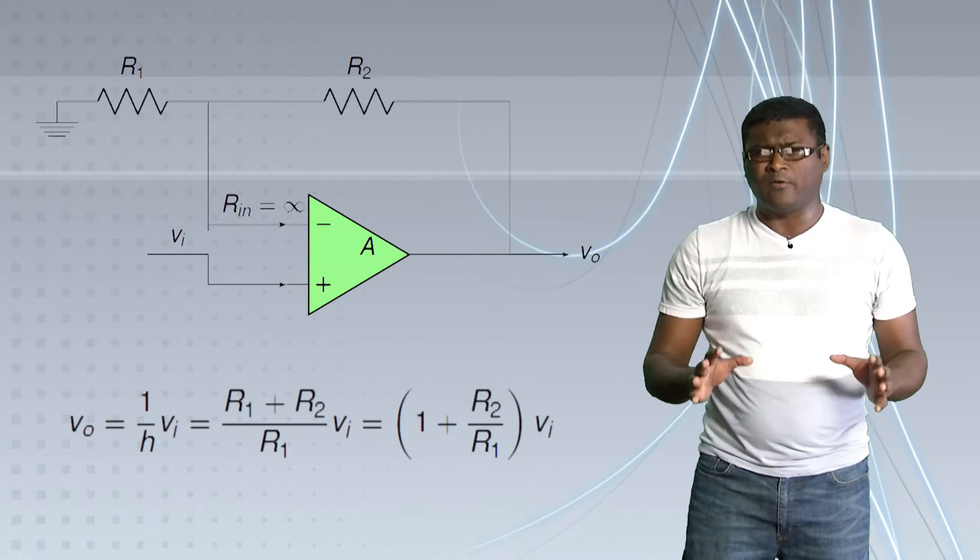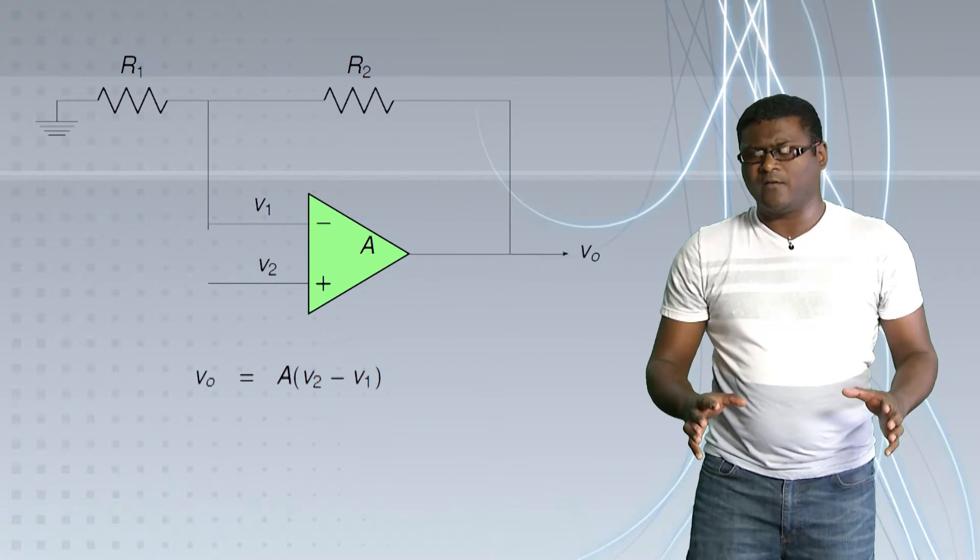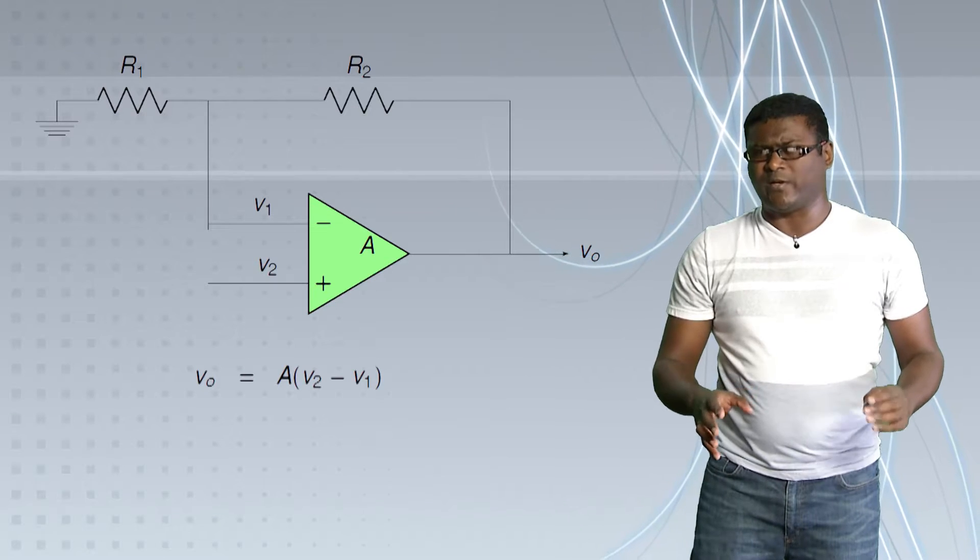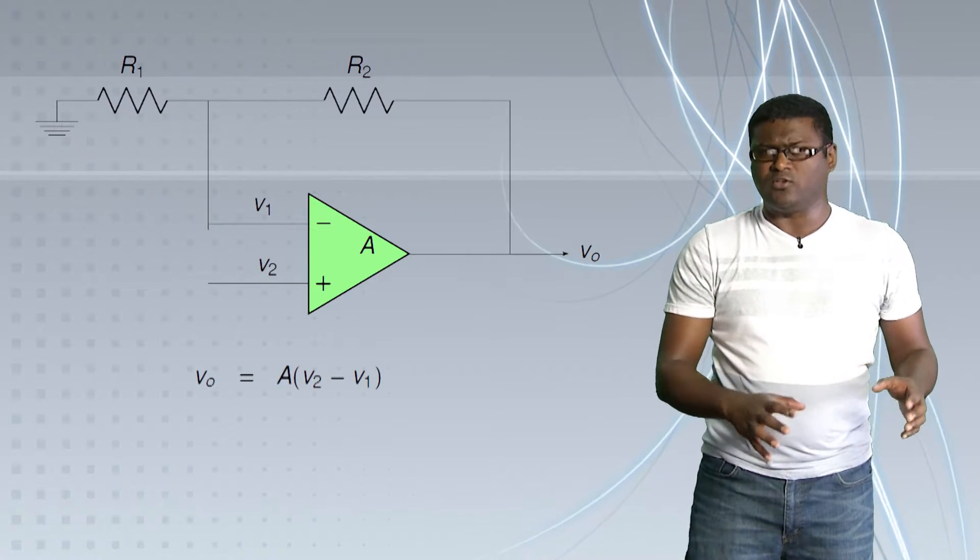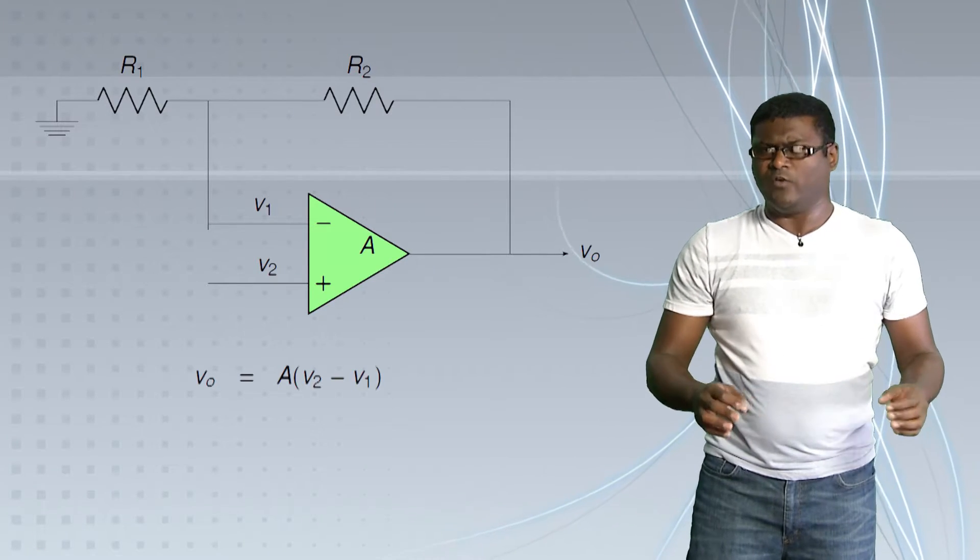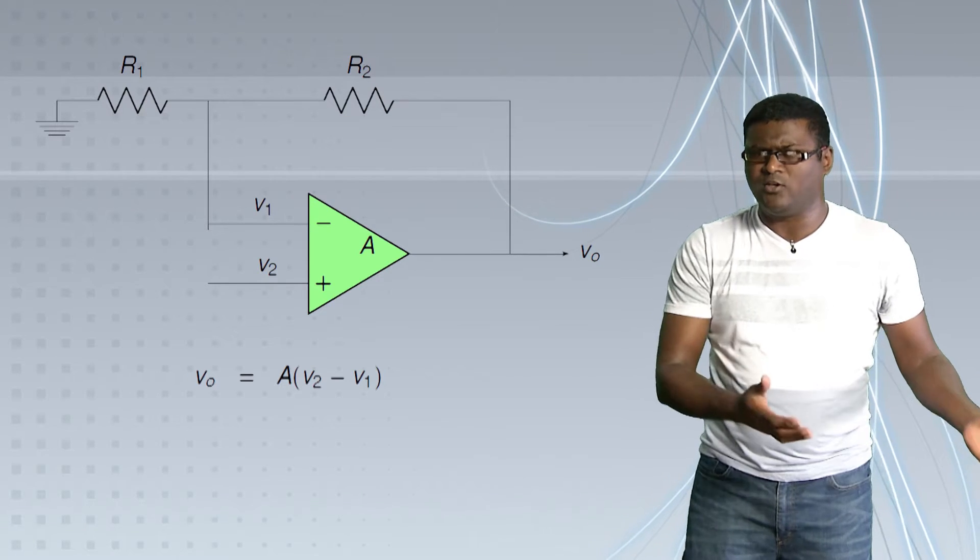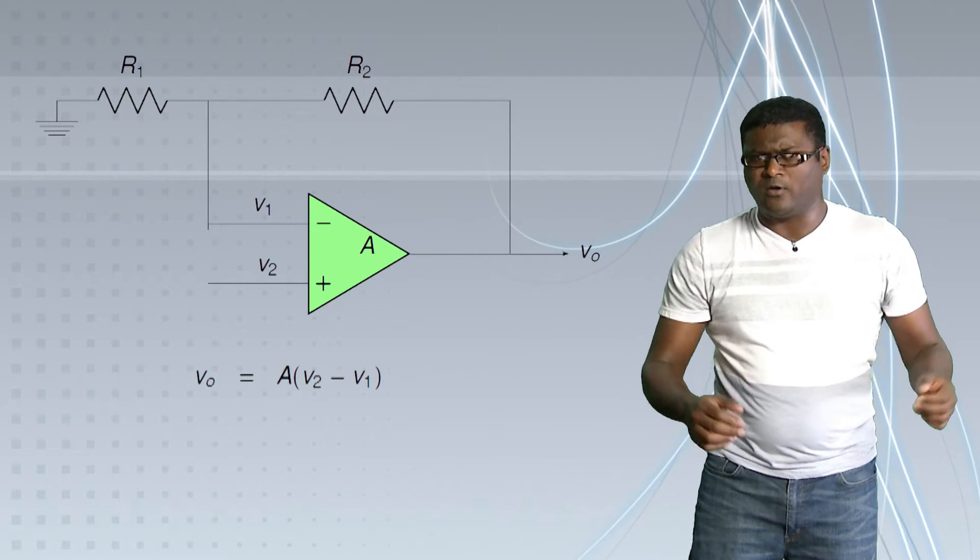Now, we said the output V0 is given as A times V2 minus V1. And in this case, if V2 is finite, we know V0 will also be finite because it's just a constant times V2. Now, let's think about this.